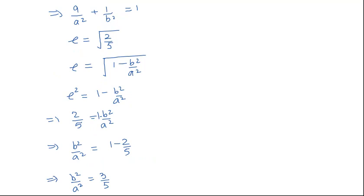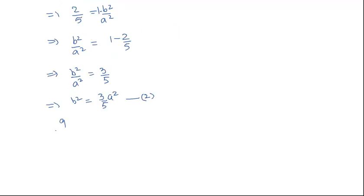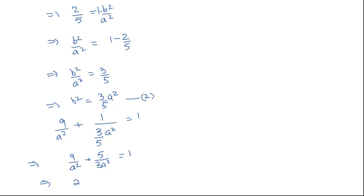Taking b² = (3/5)a² as equation 2 and 9/a² + 1/b² = 1 as equation 1, we substitute b² into equation 1: 9/a² + 1/((3/5)a²) = 1, which simplifies to 9/a² + 5/(3a²) = 1. This gives 27 + 5 = 3a², so a² = 32/3.